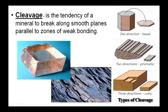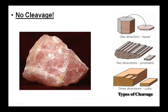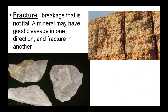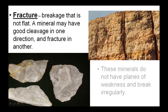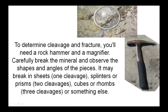Cleavage is the tendency of a mineral to break along smooth planes parallel to zones of weak bonding. Here's an example of rocks exhibiting different types of cleavage. Here's a rock showing no cleavage — it does not separate along a plane; instead, we say it has fracture. Fracture is breakage that is not flat. A mineral may have good cleavage in one direction but fracture in another. These minerals do not have planes of weakness and break irregularly — we say they have fracture. To determine cleavage and fracture, you'll need a rock hammer and a magnifier. Carefully break the mineral and observe the shapes and angles of the pieces.